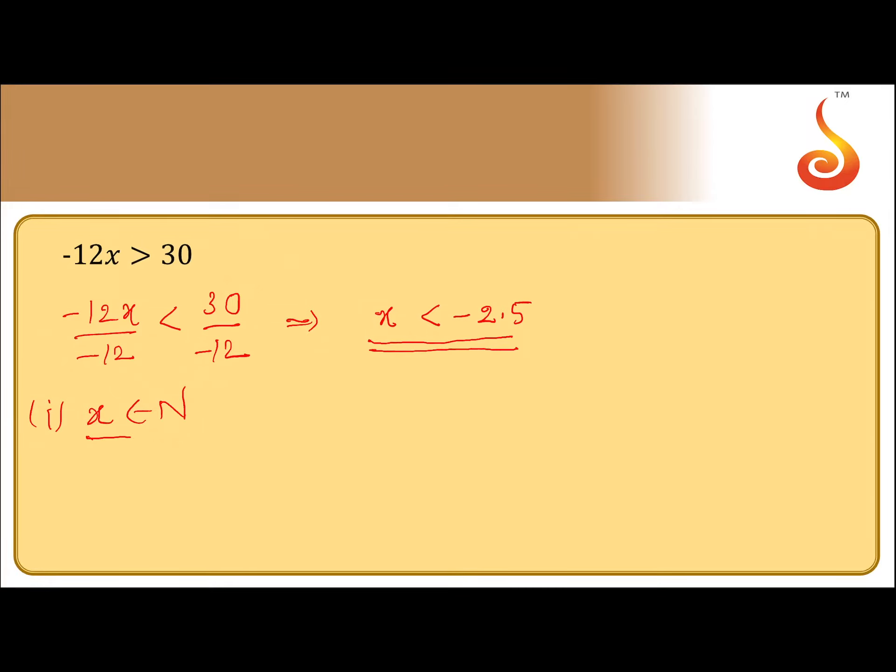We know the natural numbers start from 1, 2, 3 and so on. So definitely none of the natural numbers satisfy this inequality. Hence, I say the solution for this inequality is the null set, means there is no solution.